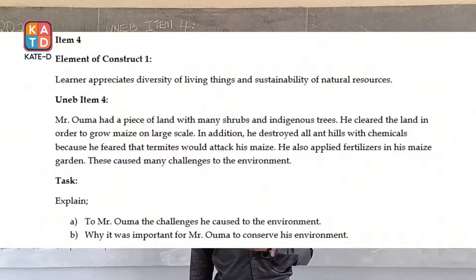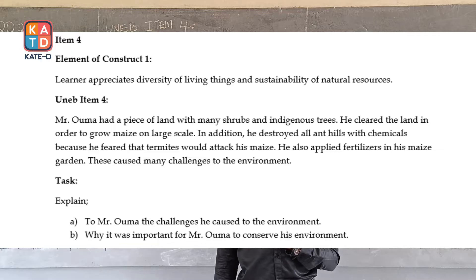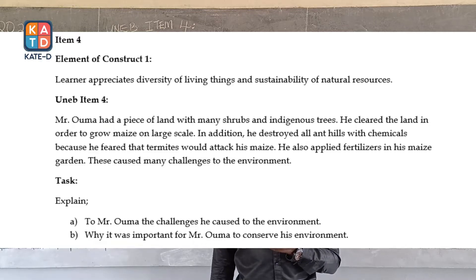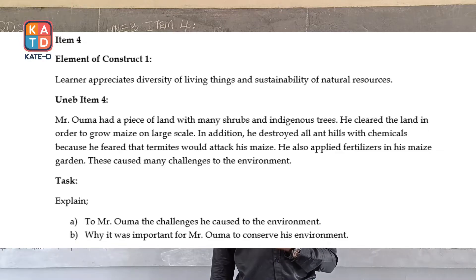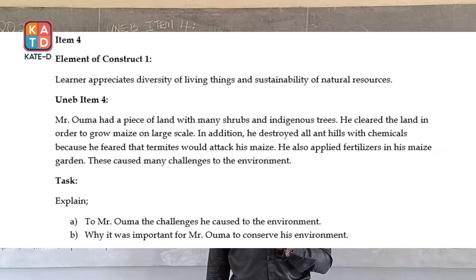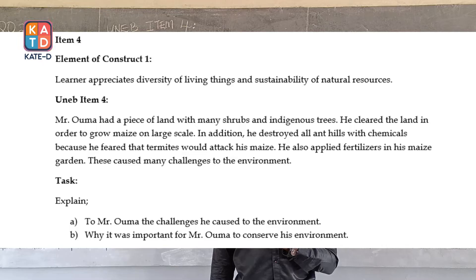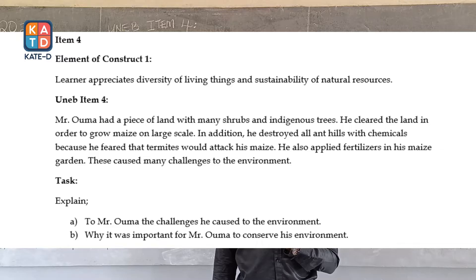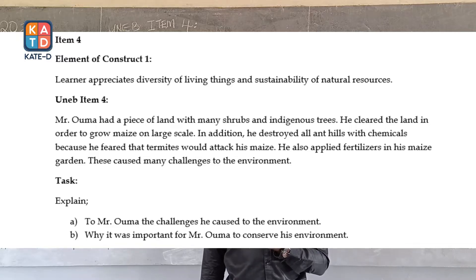Item 4 states: Mr. Ulmer had a piece of land with many shrubs and indigenous trees. He cleared the land in order to grow maize on a large scale. In addition, he destroyed all ant hills with chemicals because he feared that termites would attack his maize. He also applied fertilizers in his maize garden. This caused many challenges to the environment.